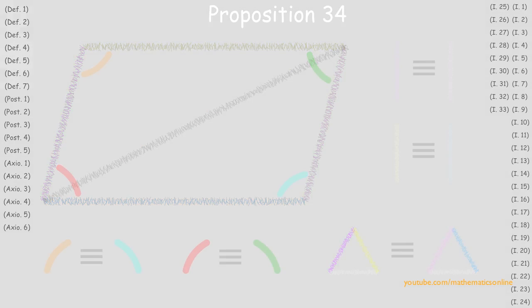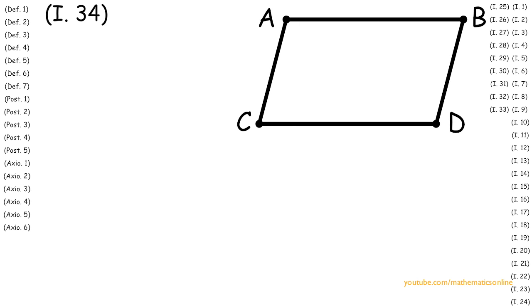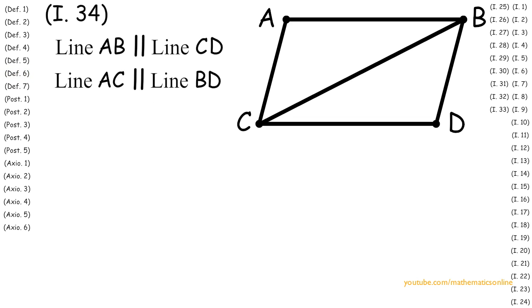To begin, we are given parallelogram ABDC with diameter BC. By definition of a parallelogram, the opposite sides are parallel, therefore line AB is parallel to line CD and line AC is parallel to line BD.